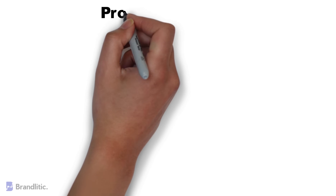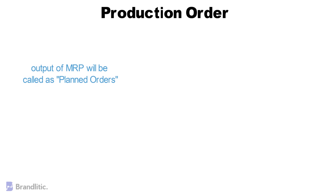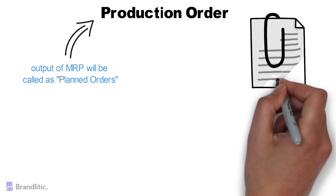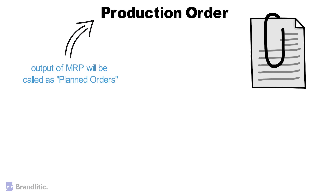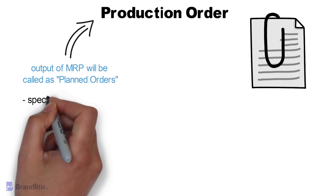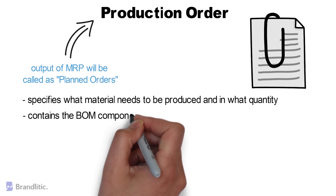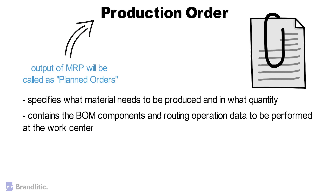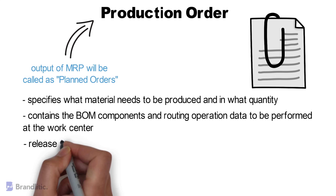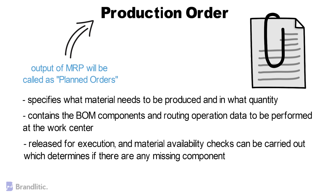Let's talk about the production order. The output of MRP will be called planned orders, which need to be converted to production orders for further execution of the process. The production order is a firm receipt element which is not affected by MRP run, unlike planned orders. Simply put, a production order is a document which specifies what material needs to be produced and in what quantity. It also contains the BOM component and routing operation data to be performed at the work center, and material availability checks can be carried out to determine if there are any missing components.